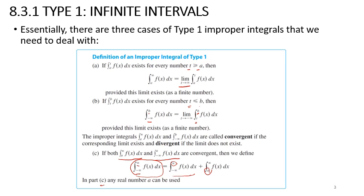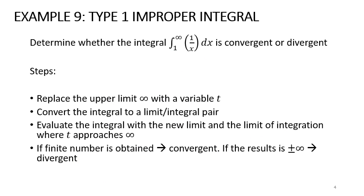Let's do some examples. For Type 1 improper integrals, determine whether the given integral is convergent or divergent. As mentioned, if there is a finite limit, the integral is convergent. If there is no limit when t approaches infinity, it is divergent. The steps are: first, replace the upper limit infinity with a variable t; then convert the integral into a limit-integral pair.